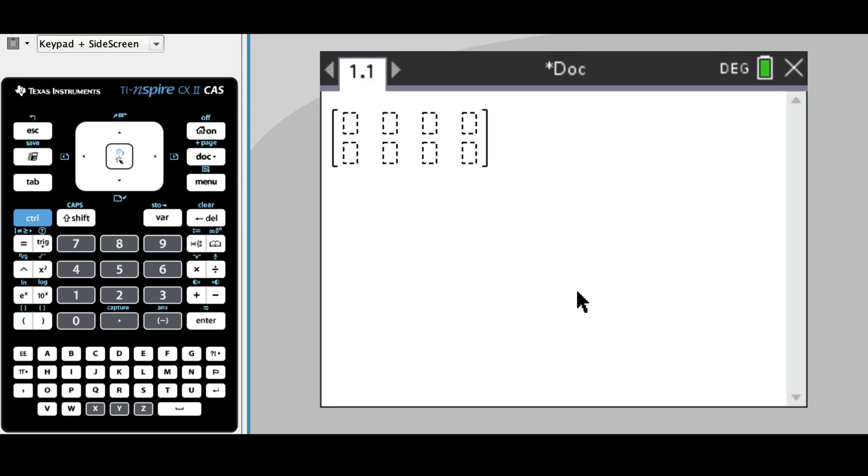Once we have the matrix entered, you'll see the little cursor flashing in the first box for the first element. We're going to enter in our numbers and use the tab button to go across from one box to another.